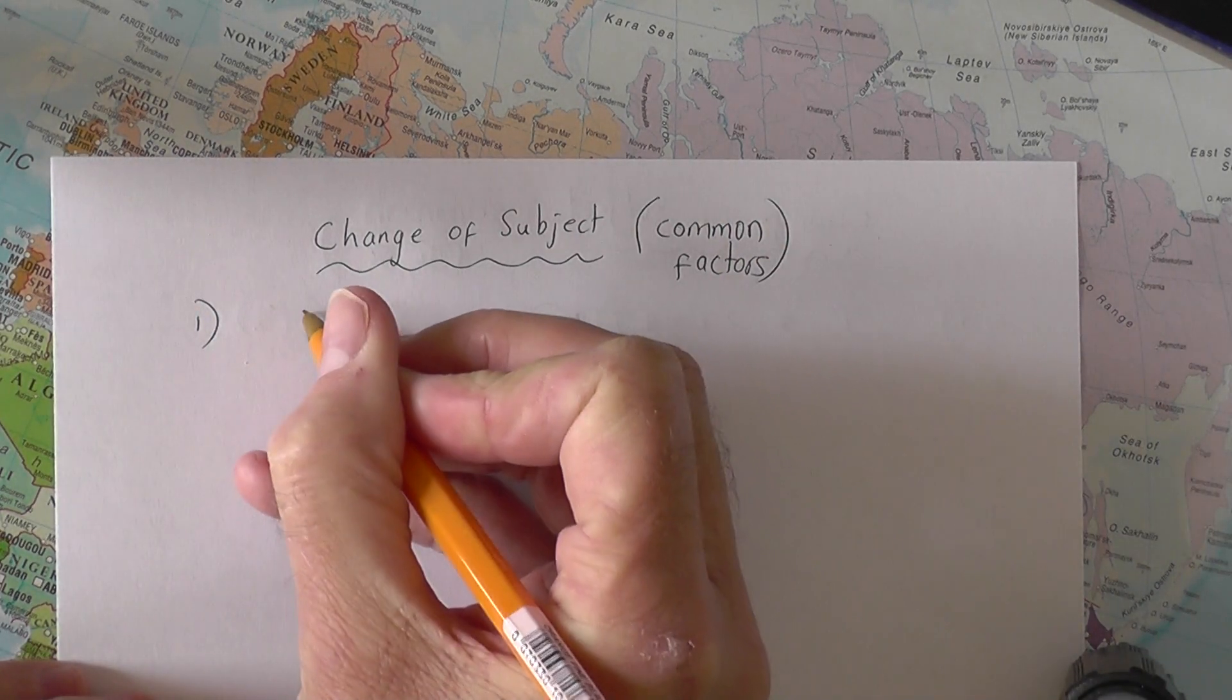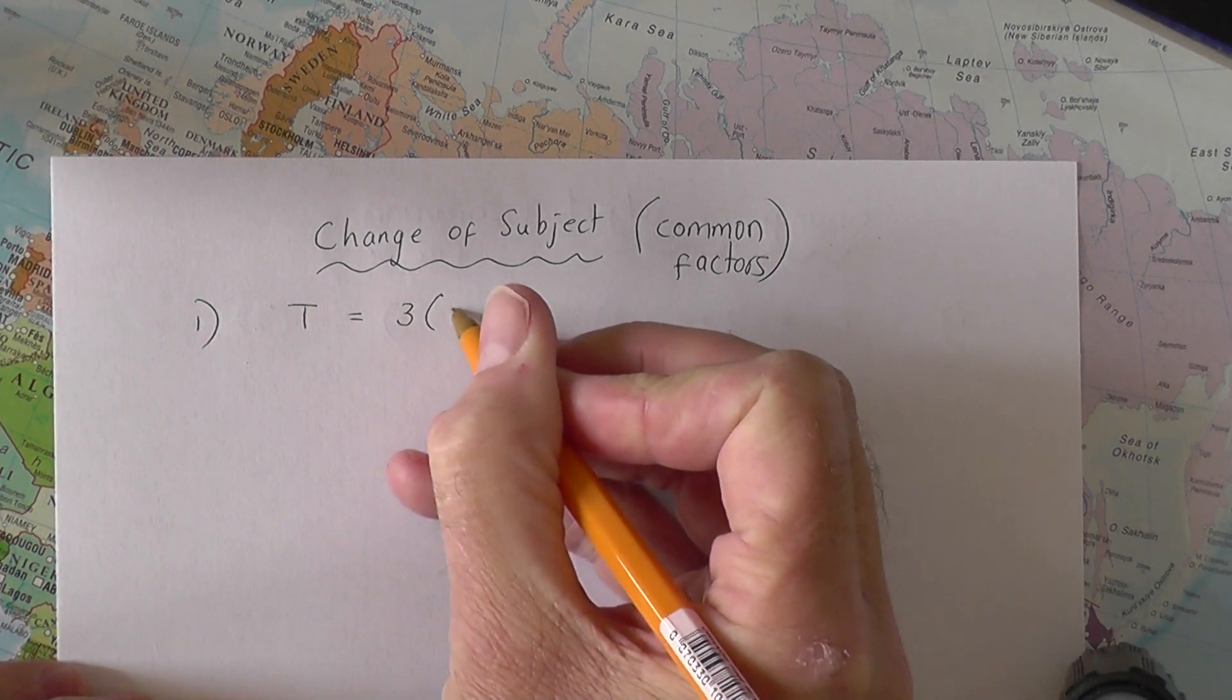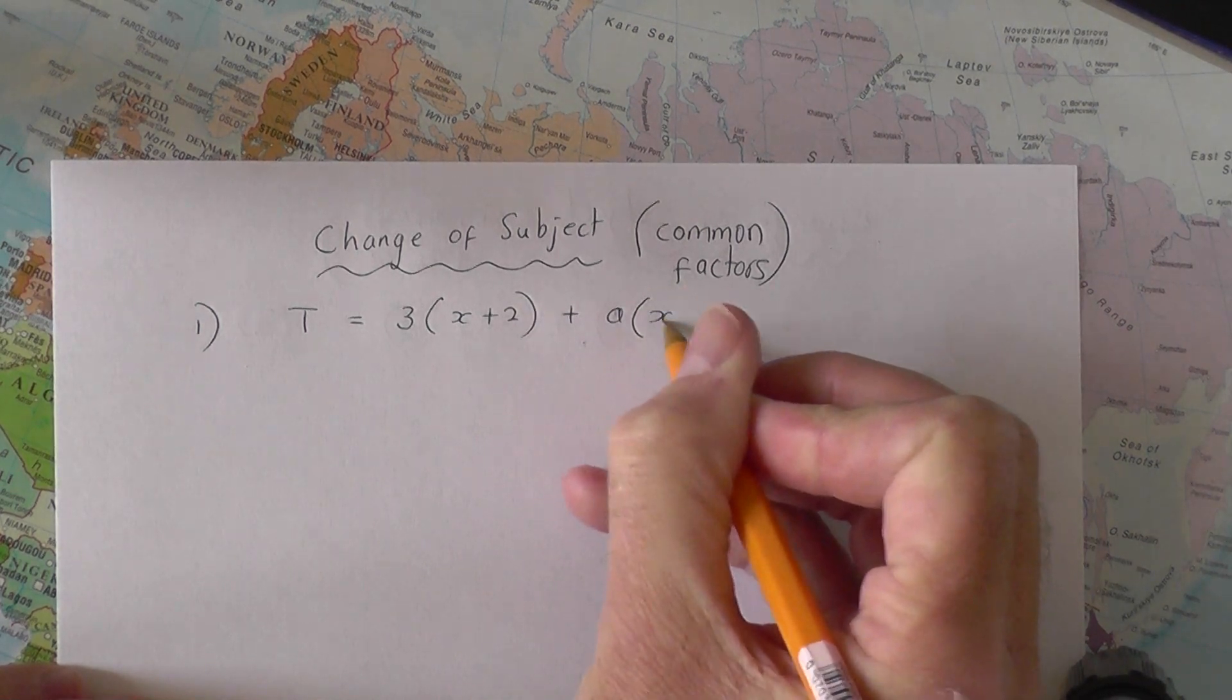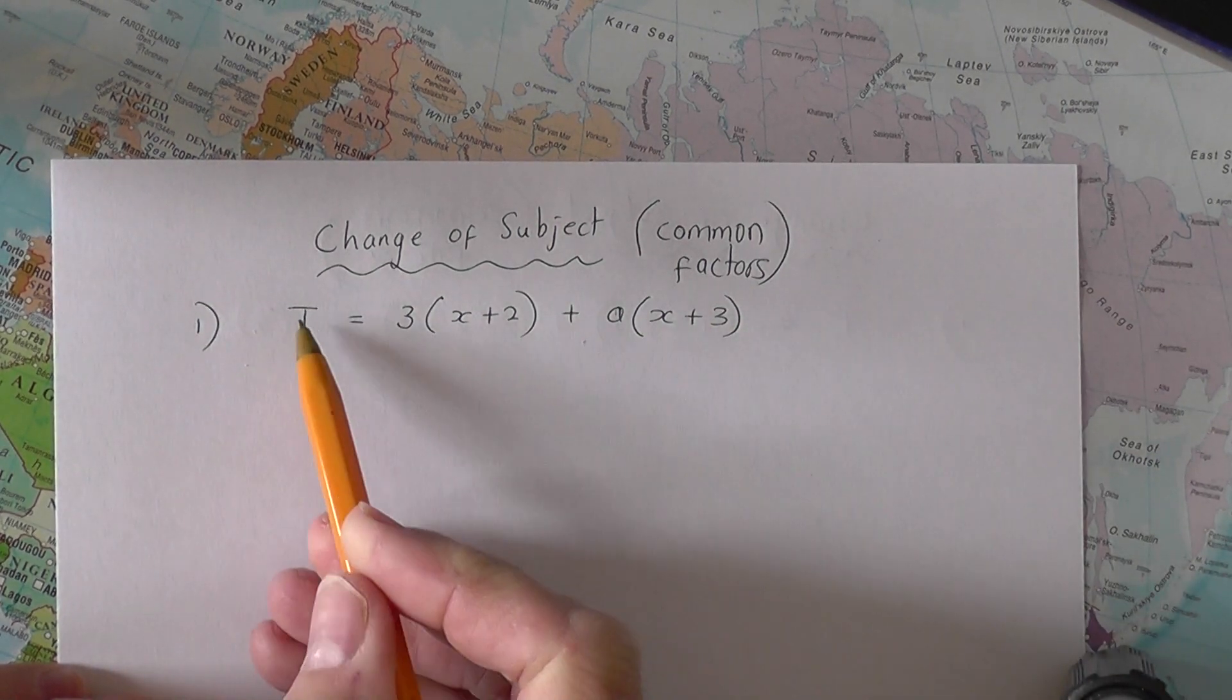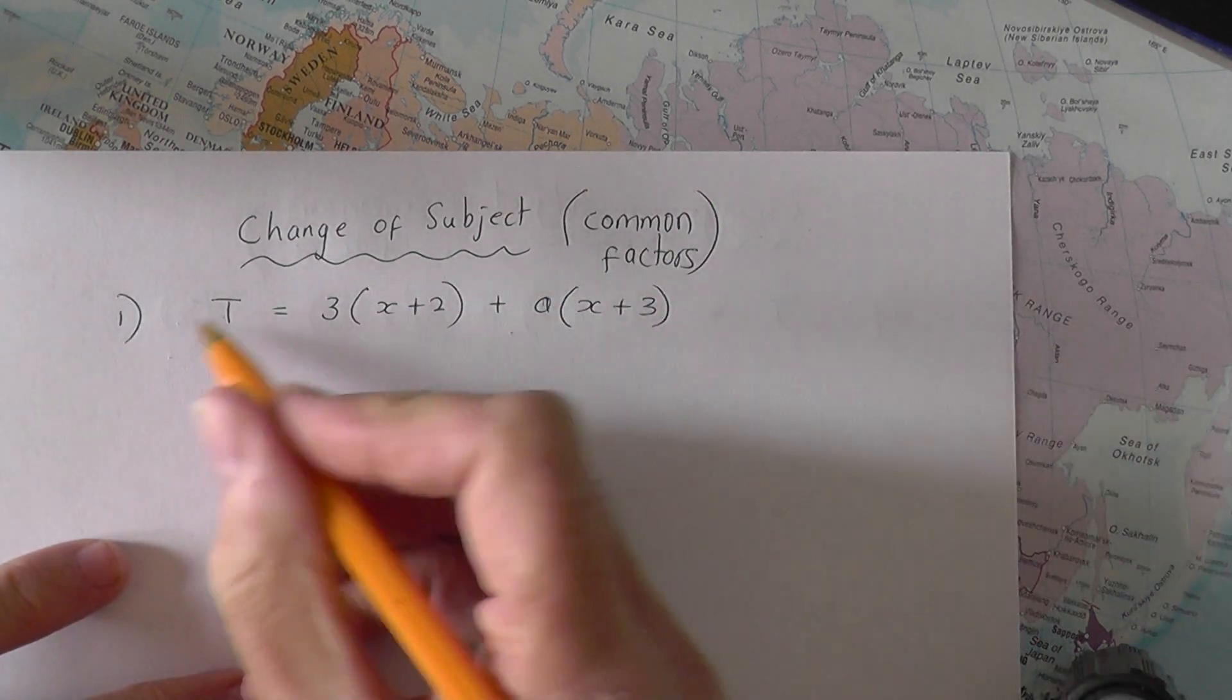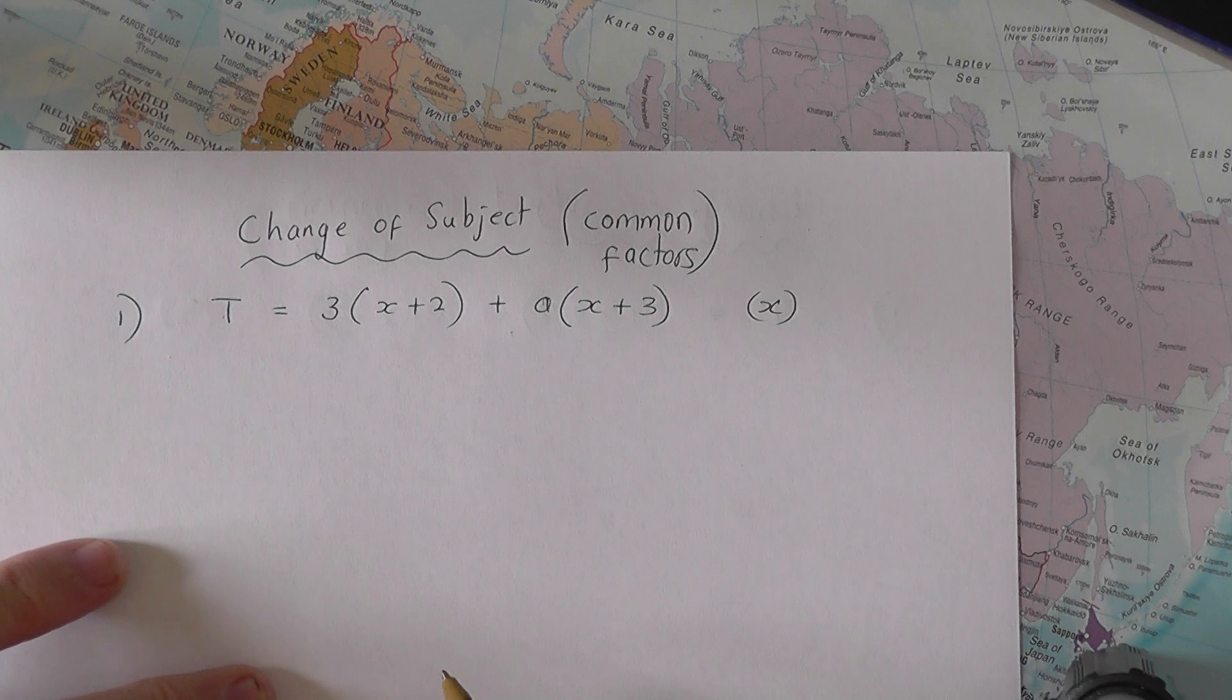Number one, let's say I give you a formula: T equals three lots of X plus two plus A lots of X plus three. At the moment this is a formula with T as the subject. What I'd like to do in this particular question is to rearrange the algebra to make X the subject of the formula.